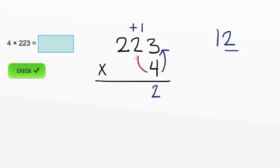So now we can multiply by the number in the tens place. So we want to know what 2 times 4 is. Well, 2 times 4 is 8. However, we need to add the 1 from the 12 to this 8. So 1 plus 8 is 9. And we're going to bring down the 9 right underneath the 2 in the tens place.